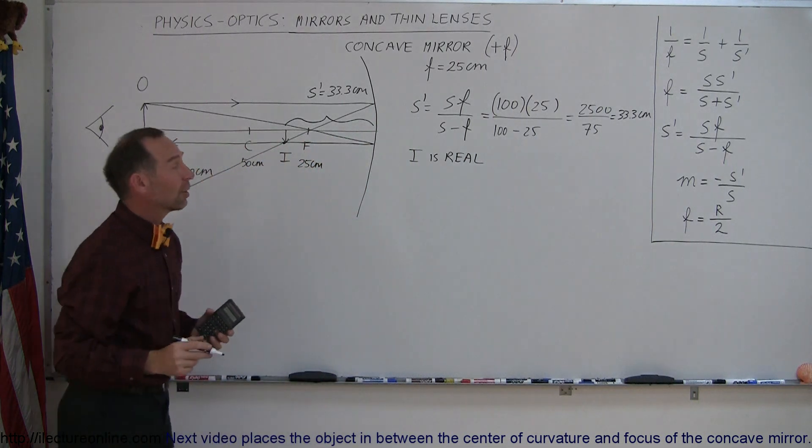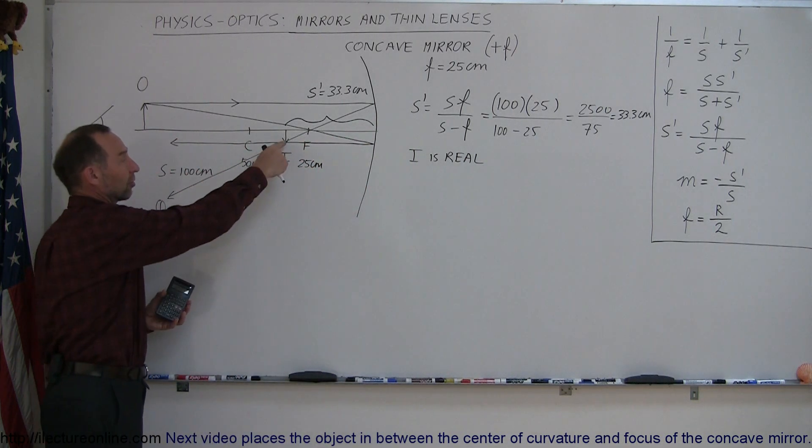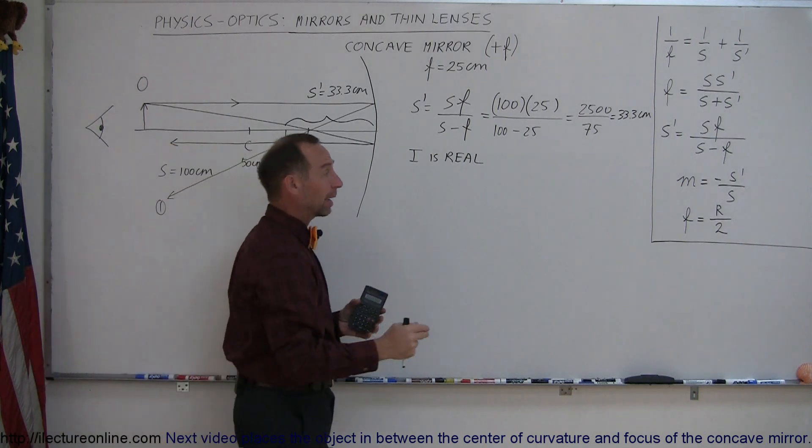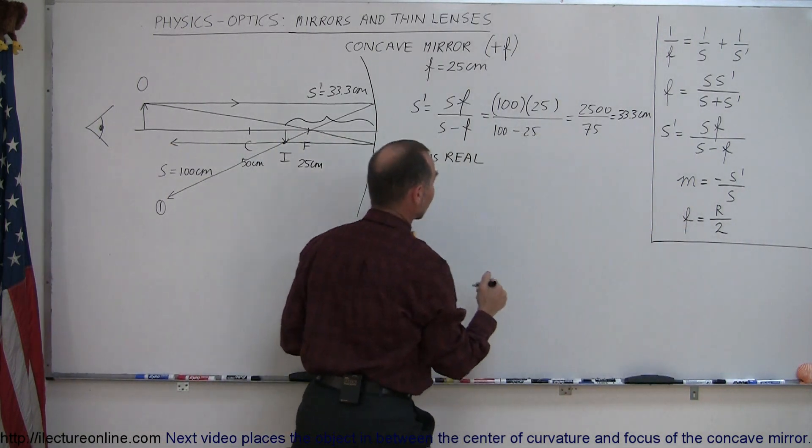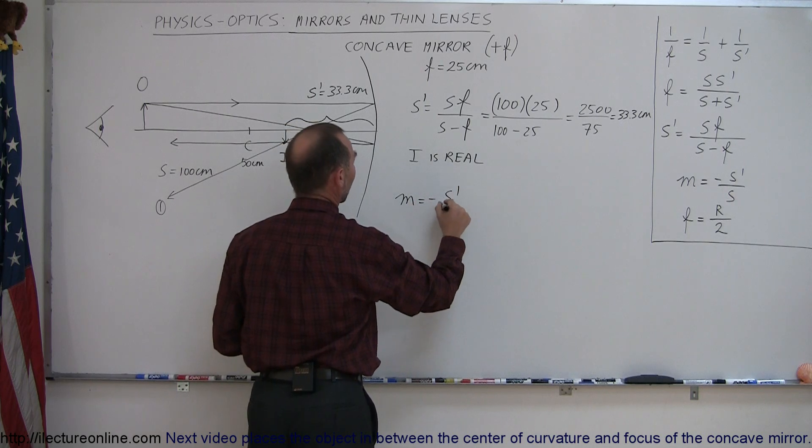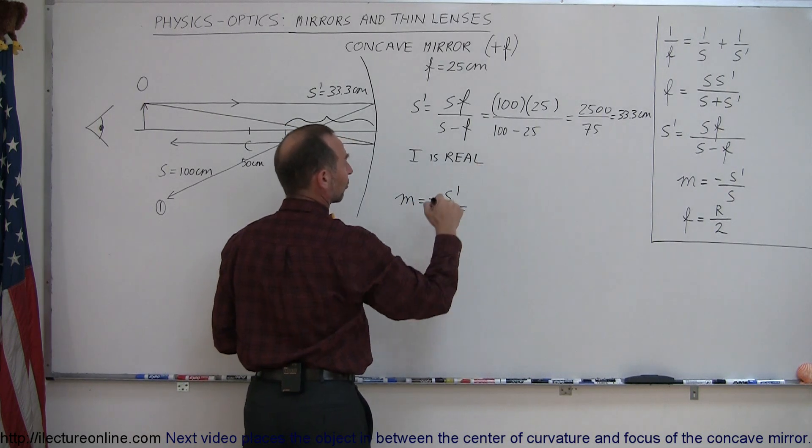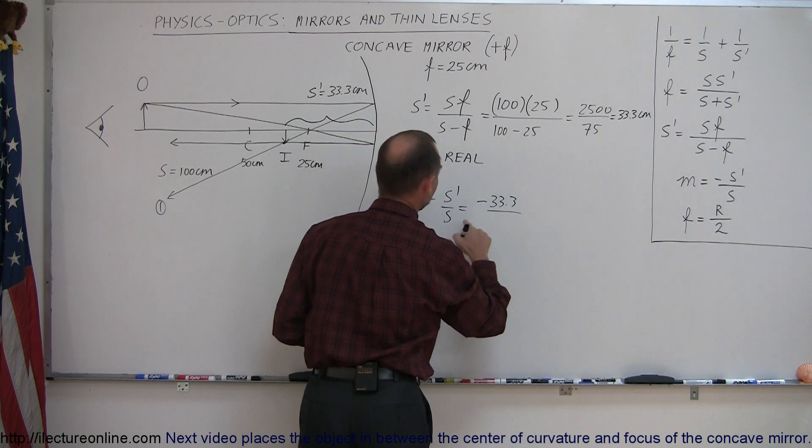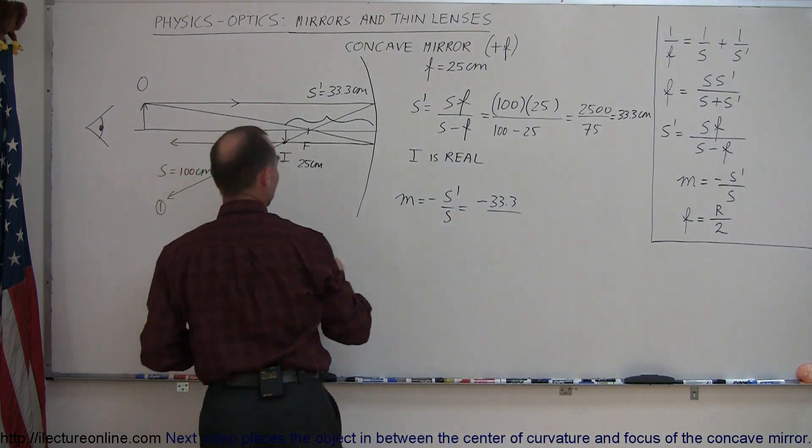The third thing we want to do is the image upright or upside down. Well, it looks like here that it's upside down. But we can also find out by finding the magnification. So here's the equation for the magnification. The magnification is equal to minus S' over S. S' was 33.3. So that becomes minus 33.3 divided by the object distance, which is 100.